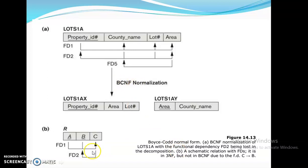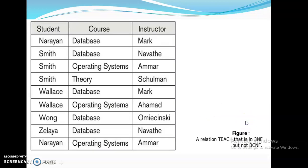But if we need to normalize into BCNF, this FD does not satisfy BCNF since C is not a super key. BCNF requires that X is a super key of R — that is the definition. Let us see one more example: the Teach schema.